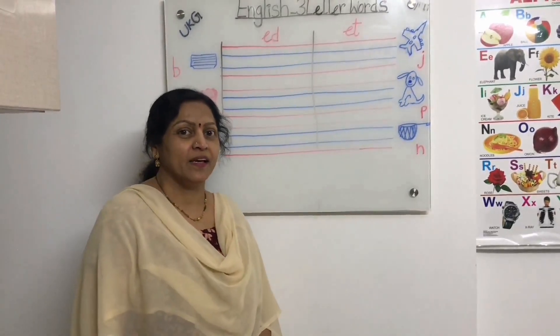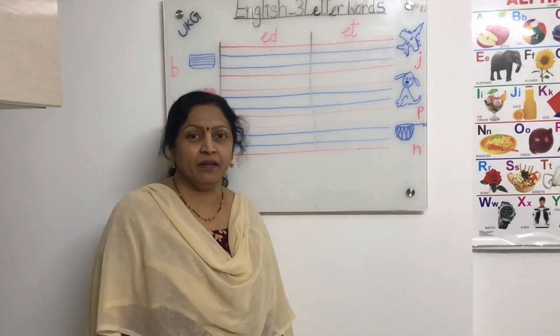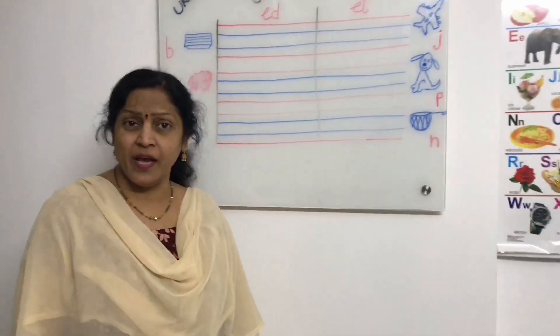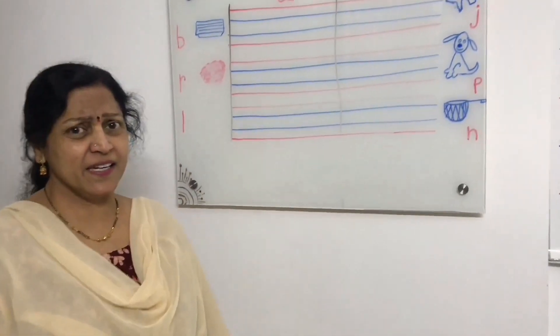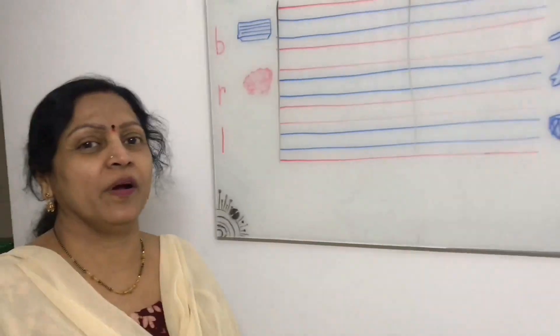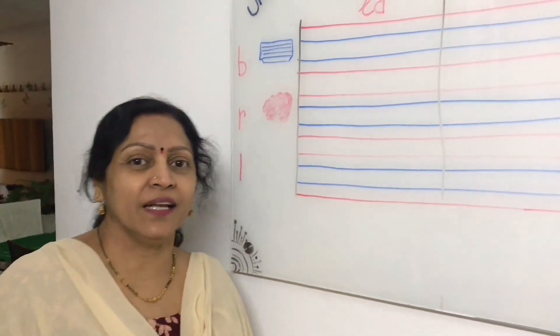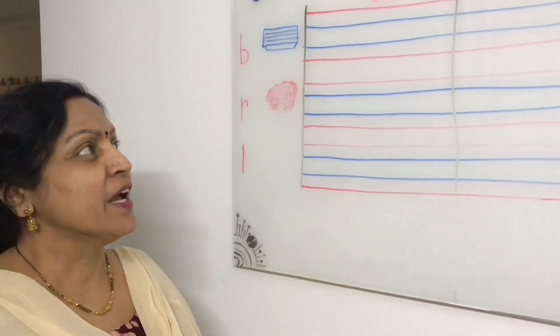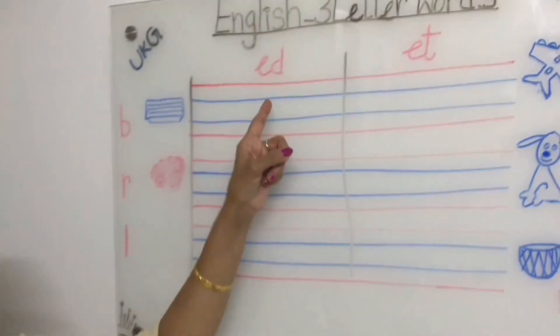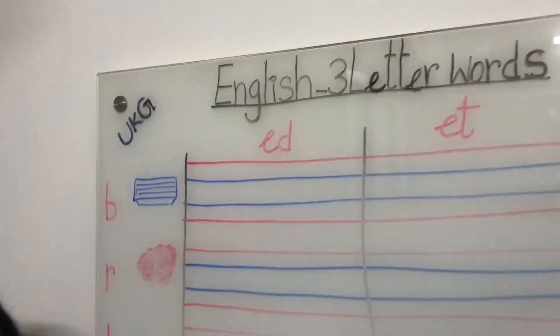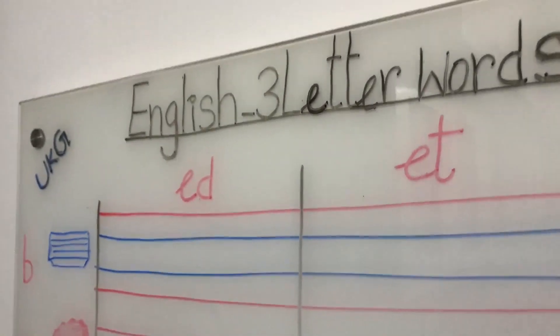Children, ready? Shall we write? Ready for writing, children? Come on, children. Now we are writing three letter words ending with ED.